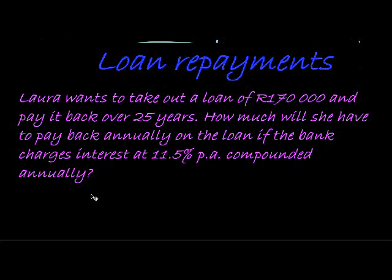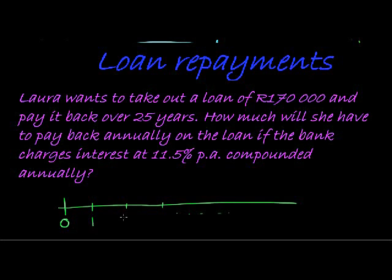So here we go. We start once again with a timeline. Here's our timeline. We are working with 25 years. It's a very common amount. Every year, one, two, three, all the way up to 25 years. And the amount that she's taken out is 170,000. Is that something she's going to get in 25 years? Or is it an amount she received right now?